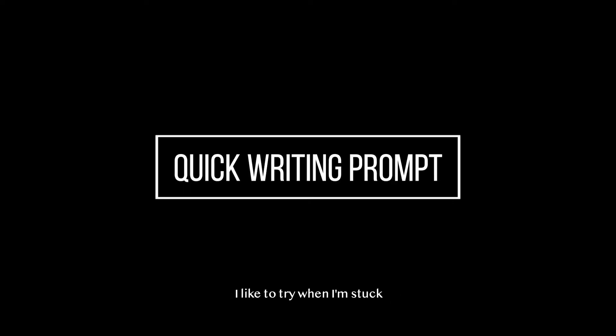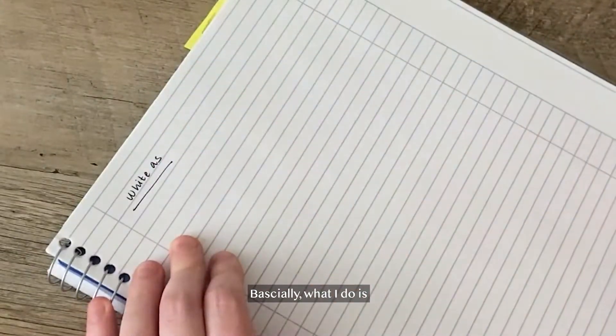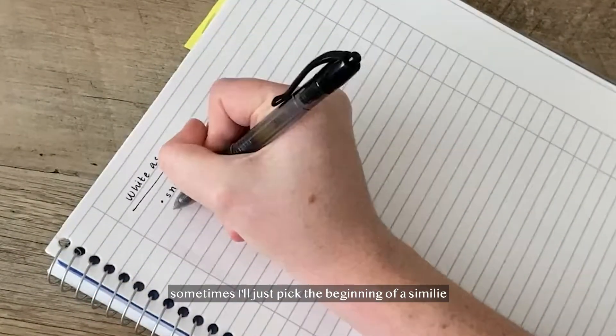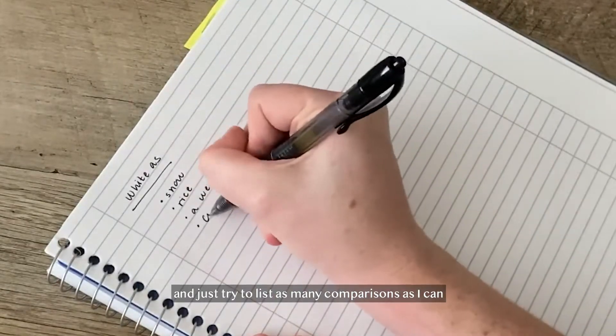So here's a quick writing prompt I like to try when I'm stuck called metaphor marathons. Basically what I do is sometimes I'll just pick the beginning of a simile like white as and just try to list as many comparisons as I can in a row.